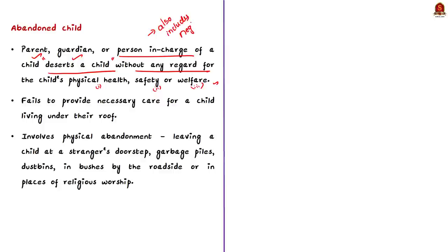Abandonment typically involves physical abandonment, such as leaving a child at a stranger's doorstep when no one is home, or leaving a child in public places like garbage piles, dustbins, in bushes near roadsides, or in places of religious worship. This is known as abandonment of a child.